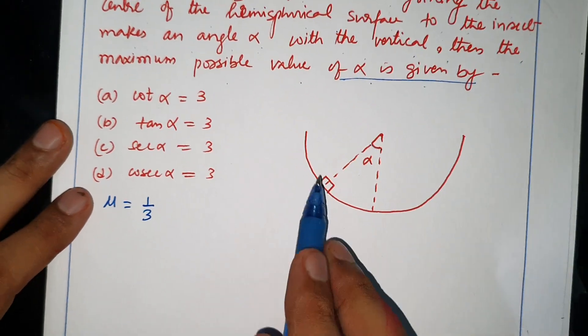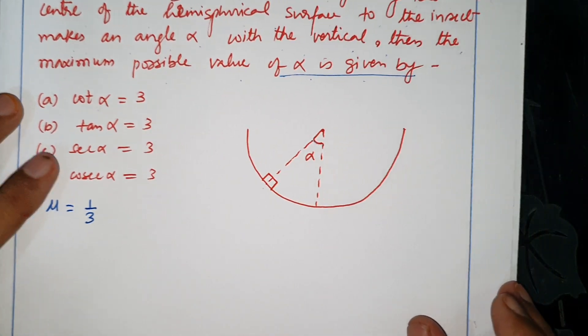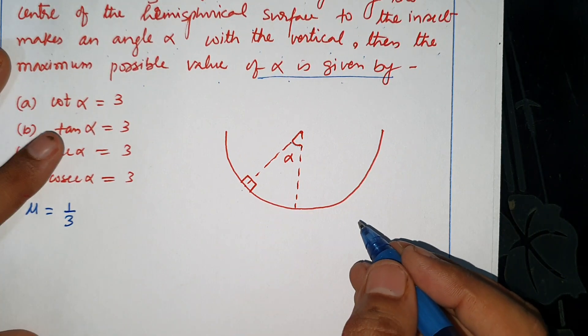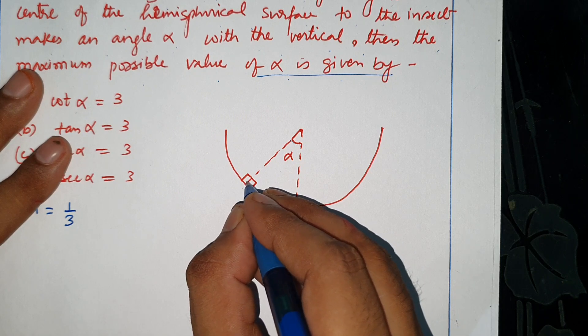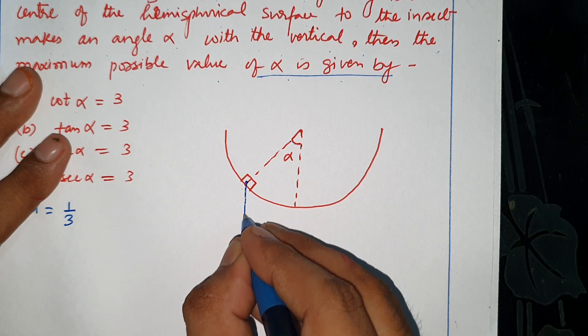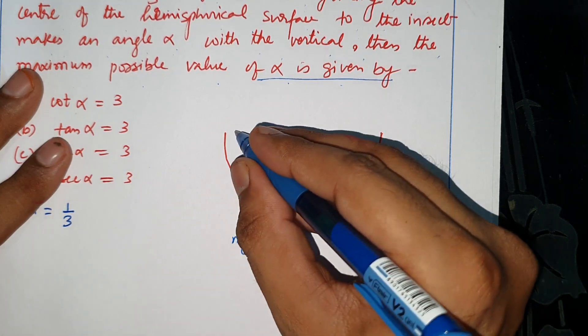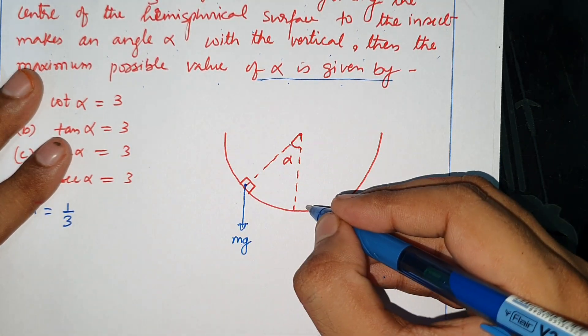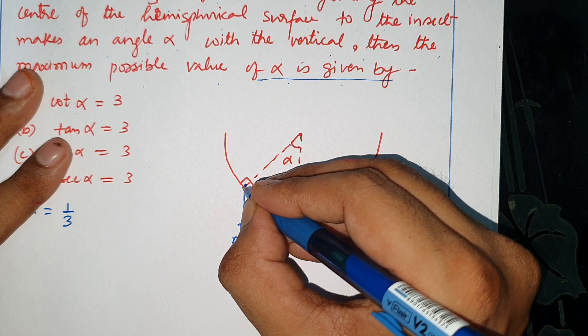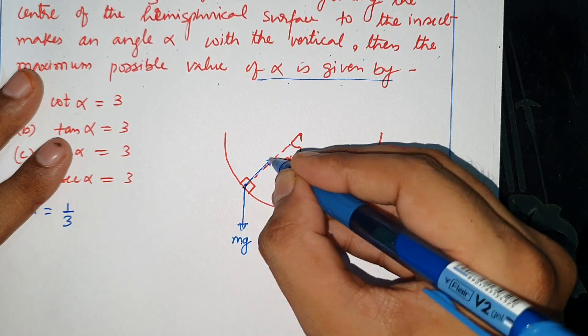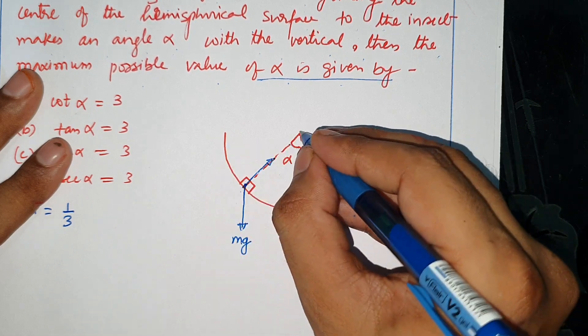This is the diagram, this is the insect which makes the vertical angle of alpha. The weight of the insect acts in the downward direction. The hemispherical surface will exert force in the normal direction toward the center.